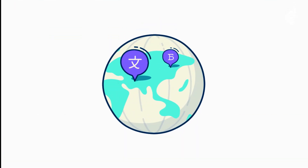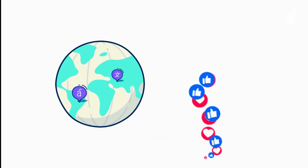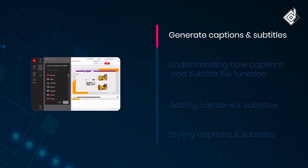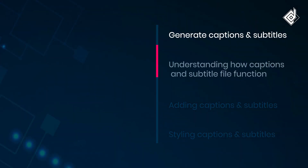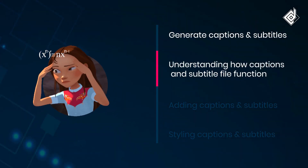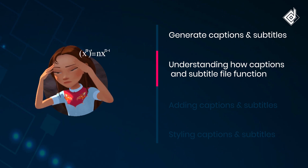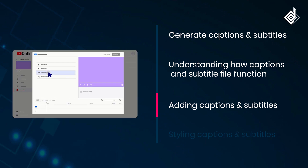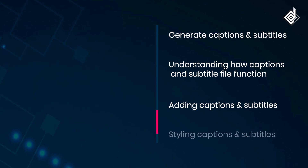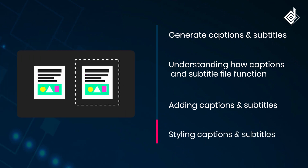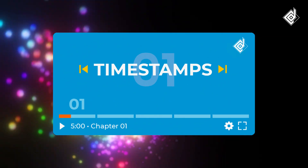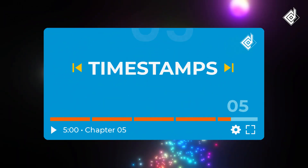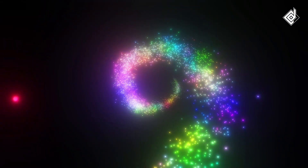Get ready to enhance the accessibility and engagement of your content with just a few simple steps. This video is divided into four segments: generating captions and subtitles for the video; understanding how caption and subtitle file formats like VTT, SRT, and SVV function; adding captions and subtitles to the video; and styling captions and subtitles using CSS. Timestamps are provided so you can quickly navigate to the part that interests you.